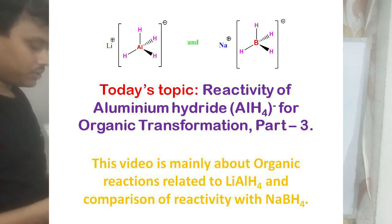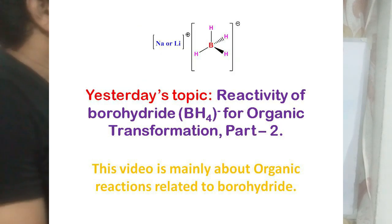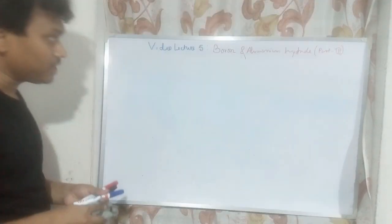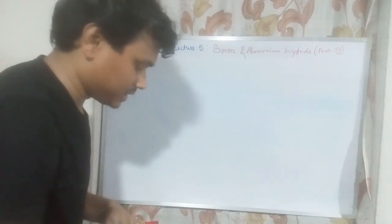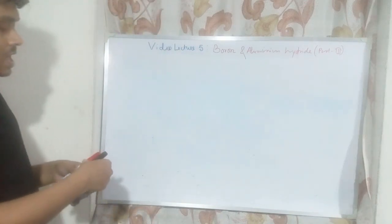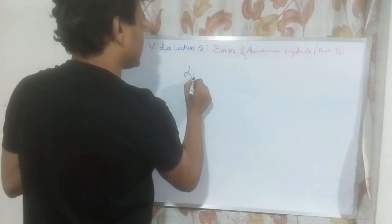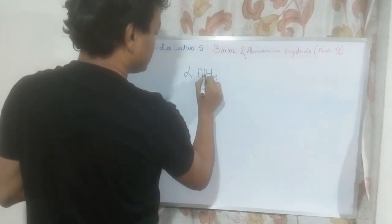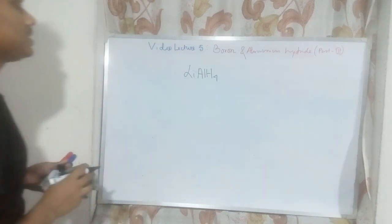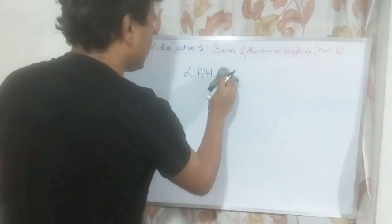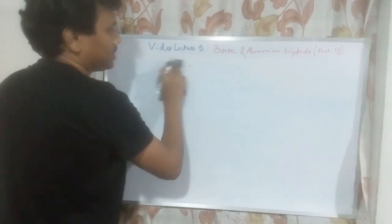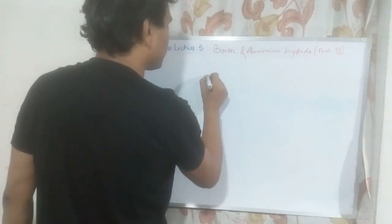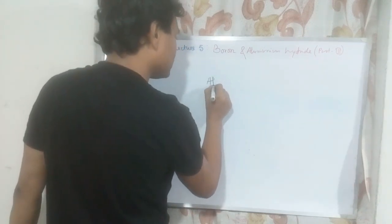Before going to details, I want to explain this aluminium hydride. One of the very famous aluminium hydride reagents is lithium aluminium hydride. This reagent is widely used as a reducing agent in organic chemistry. Let us check some basic properties of this lithium aluminium hydride.